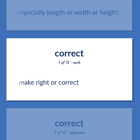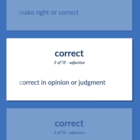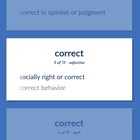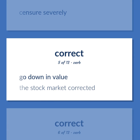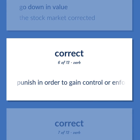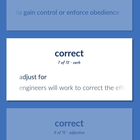CORRECT: Make right or correct. Correct in opinion or judgment. Socially right or correct — correct behavior. Censure severely. Go down in value — the stock market corrected. Punish in order to gain control or enforce obedience. Adjust for — engineers will work to correct the effects of air resistance.